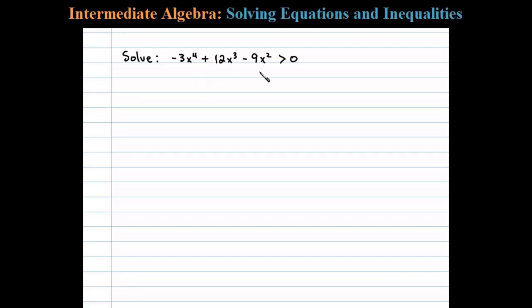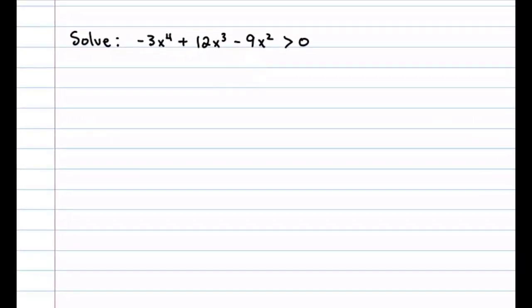Here we're asked to solve a polynomial inequality. To do this, we'll make use of a sign chart. We begin by finding the critical numbers. For a polynomial function, the critical numbers are the roots, so we'll set this equal to zero and solve.